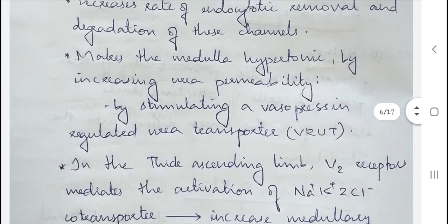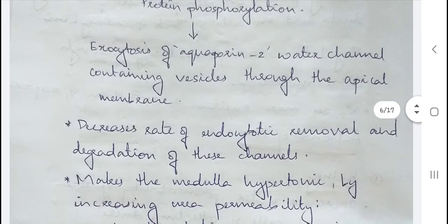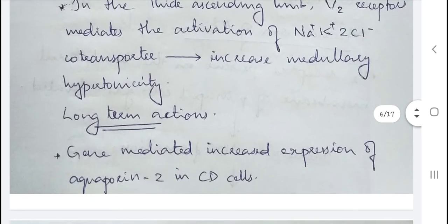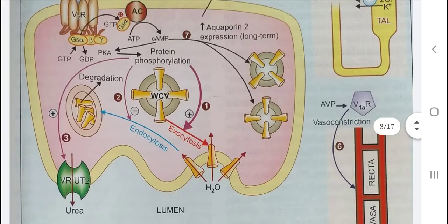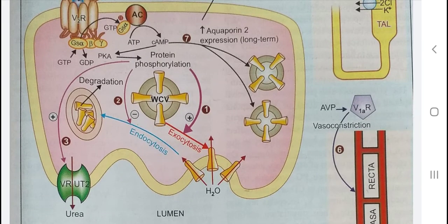These are the short-term or rapid actions of AVP at V2 receptors. The long-term actions consist of increased genetic expression of aquaporin-2 in the collecting duct cells, resulting in increased water reabsorption. There is also increased genetic expression of Na-K-2Cl cotransporters in the thick ascending limb cells, which increases medullary hypertonicity. The increased cyclic AMP concentration drives this long-term aquaporin-2 channel expression.